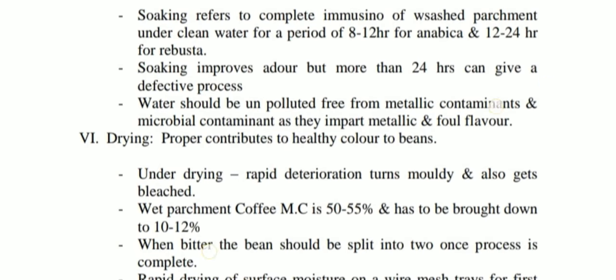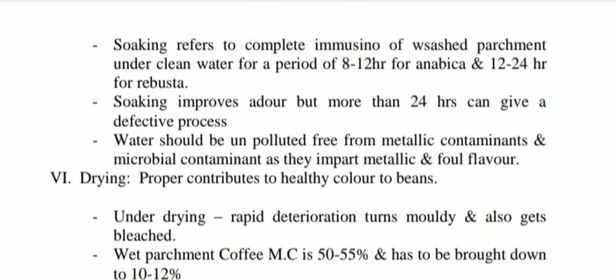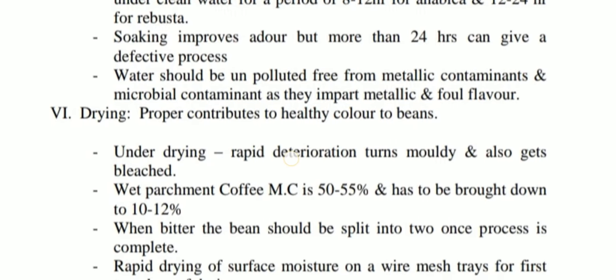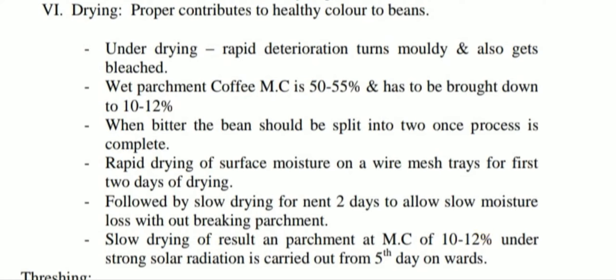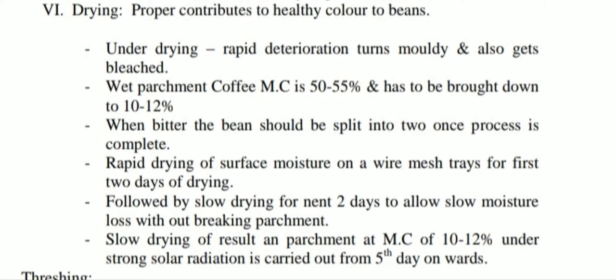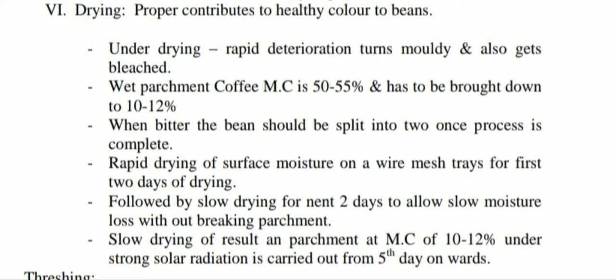Next, soaking is done, then cleaning. All these steps work to remove the outer layers one by one to obtain the beans — this is the wet process. Then drying is done. The moisture content of wet processed coffee is 50 to 55% and should be brought down to 10 to 12%. The indication of drying completion is that beans split in two, so controlled drying is applied.